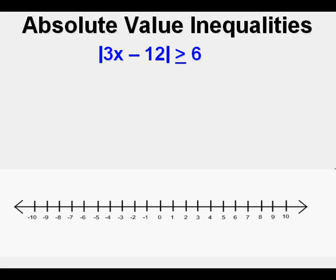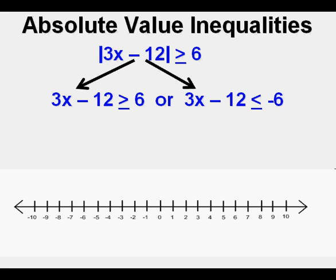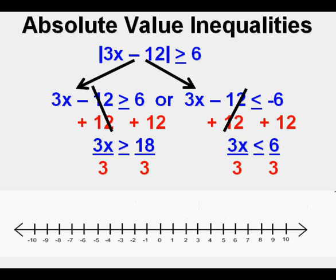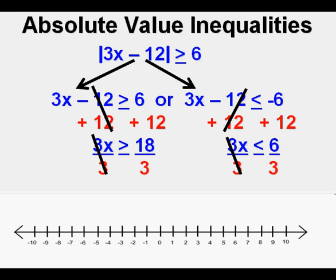Here's another one. The absolute value of quantity 3x minus 12 is greater than or equal to 6. Since it's more, we bring it down to two ways: 3x minus 12 is greater than or equal to 6, or 3x minus 12 is less than or equal to negative 6. We solve each inequality by adding 12 to both sides, cancel the negative 12 plus 12, and bring down what's left. Then we divide each inequality by the coefficient of x, which is 3, and cancel the 3s. We have x is greater than or equal to 6, and x is less than or equal to 2. We put the boundary points at 6 and 2, then draw the arrows outward. The graph solution is all real numbers such that x is less than or equal to 2 or greater than or equal to 6.